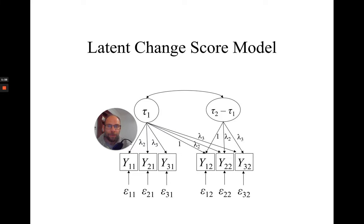In this video, I'm going to show you what the results look like for a latent change score model where we have two time points and three indicators for our latent variables. In this parameterization of the latent change score model, we have a tau 1 factor on the left-hand side that indicates the true scores at time 1. Then we have a change score factor, tau 2 minus tau 1, that indicates true change over time — true individual differences in change over time represented by this factor. Let's take a look at the Mplus output for a model like this, so you can get a sense for what the relevant parameters are and how they are interpreted.